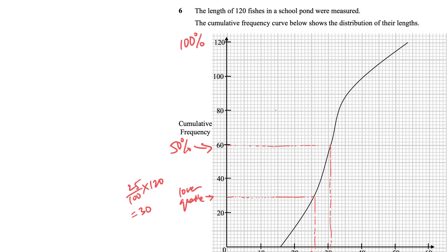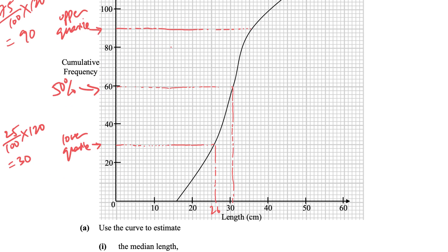And then I want to find my upper quartile, which is 75% of all 120 fishes, I get 90. That means over here is my upper quartile. And so we take 90, and we just go.